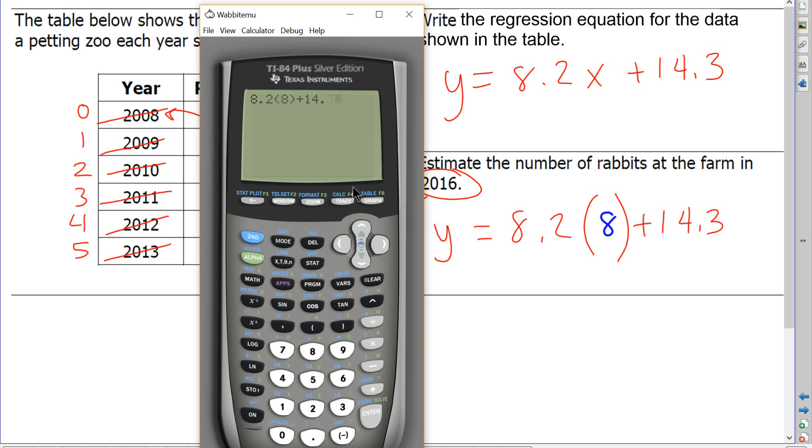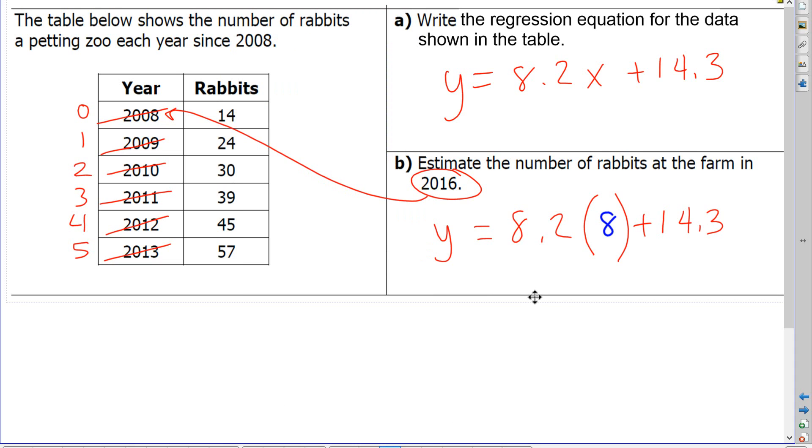I can type it exactly how I see it on my paper. And it will evaluate that in 2016, the number of rabbits will be approximately 80. 79.9 would be approximately 80 rabbits.